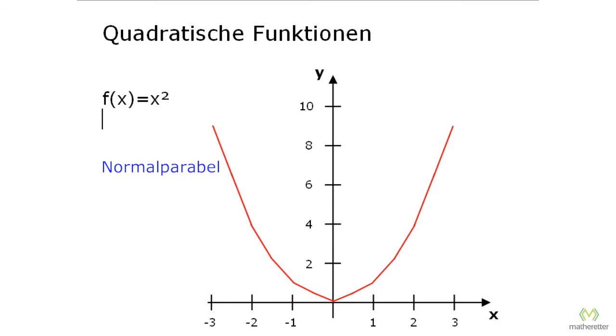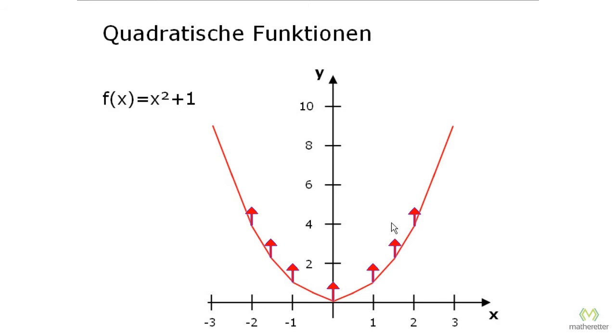We have seen linear functions, we can now for example add a plus 1 here. Then each value is increased by 1, so 0 goes to 1, this value at 1 was 1 which goes to 2 and so on. So everything moves 1 up. And if we were to calculate plus 2 now, the graph would have to be moved up by 2. And the same is valid if we subtract 1, and so on.